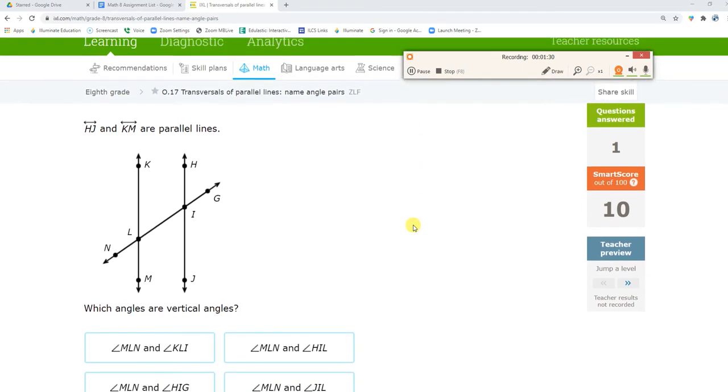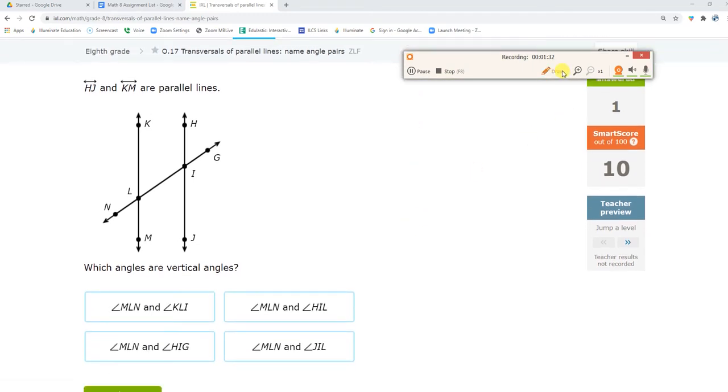What am I looking for here? Vertical angles. Okay, vertical angles. MLN. His vertical is right here, which is KLI, this one right there.